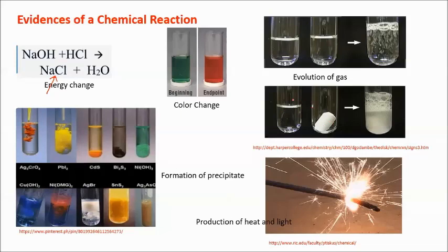Another evidence is evolution of gas. If we have a liquid and add a solid material, you can see the result — there is evolution of gas in the form of bubbles. Next is the production of heat and light — any process of burning is a chemical reaction, transforming reactants into new substances in the form of heat and light. Another evidence is formation of a precipitate. After adding one substance to another, it becomes cloudy, and using a centrifuge, new substances settle to the bottom — that is the precipitate.